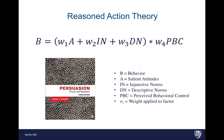So let's begin with the reason-action theory model. Behavior change, represented with B, is a function of attitudes (A), injunctive norms (IN), descriptive norms (DN), and control beliefs, or perceived behavioral control. The little W's represent weights.